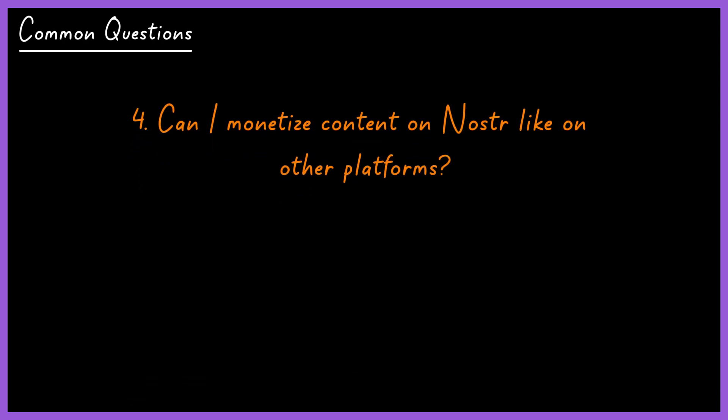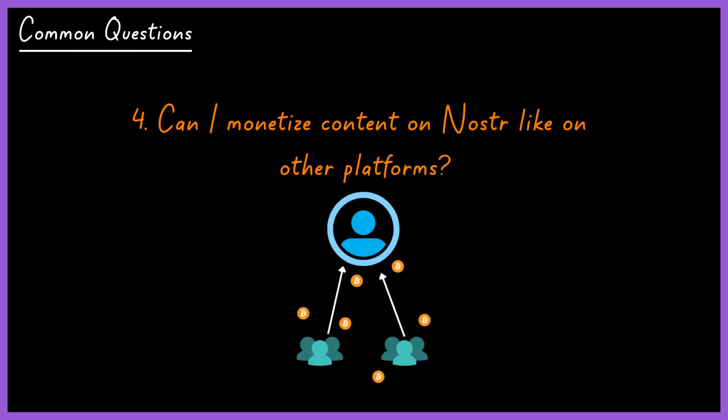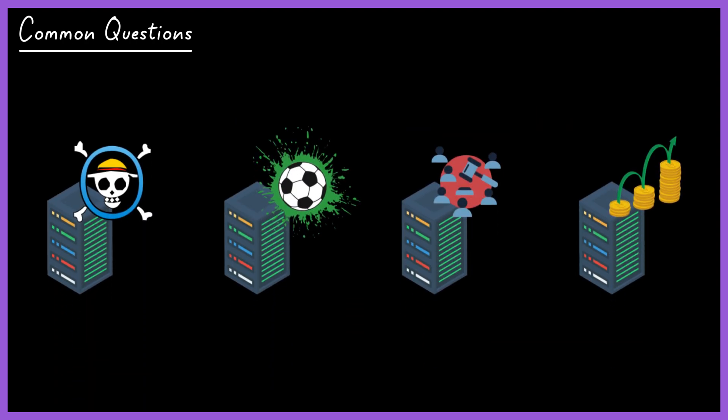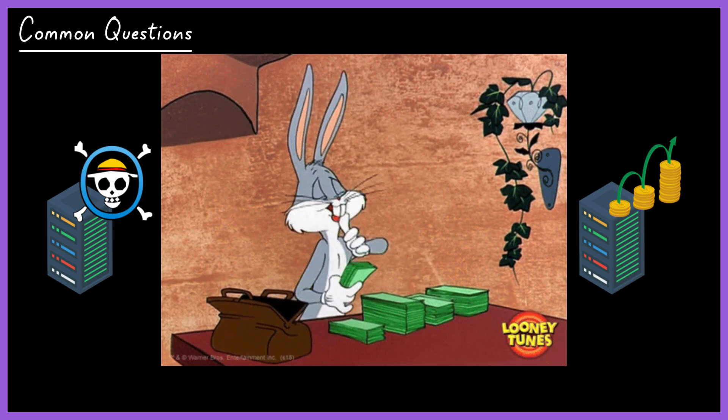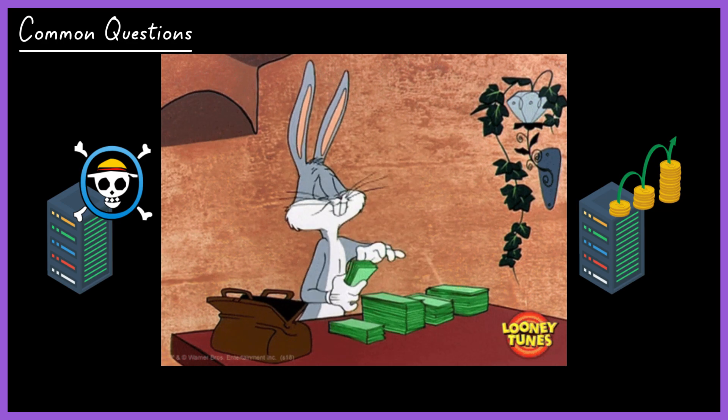Can I monetize content on Nostr like on other platforms? Yes, but differently. You can receive small fractions of Bitcoin from the community through your posts — called Zaps — which are transactions made on Bitcoin's Lightning Network. Another way to monetize is by creating private relays targeted at specific niches like anime, football, politics, or finance, and charging for the use of these exclusive relays.